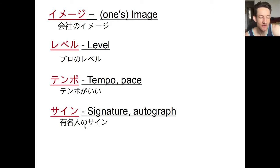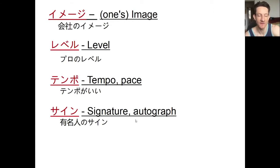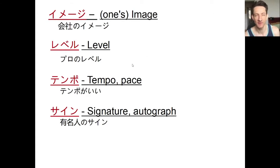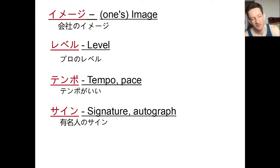Finally, サイン means 'signature' or 'to sign something.' We can say 有名人のサイン — 有名 means famous, 人 means person, so a famous person's autograph. It can also be used as a verb: サインしてください — please sign here, like on a piece of paper or a contract. Pretty simple vocabulary words, easy to remember — テンポがいい is a good phrase to remember.